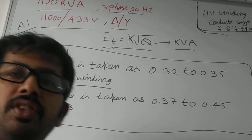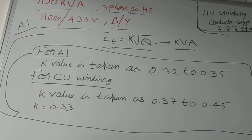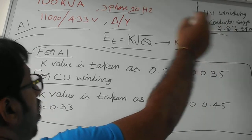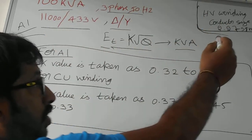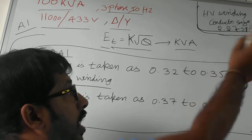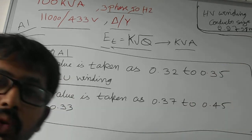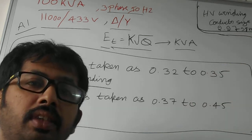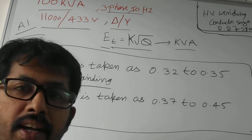Hello friends, in the previous video I explained about the HV conductor size of 100 kVA transformer which we got as 2.27 square mm. Now I want to calculate the number of turns of HV winding and LV windings.